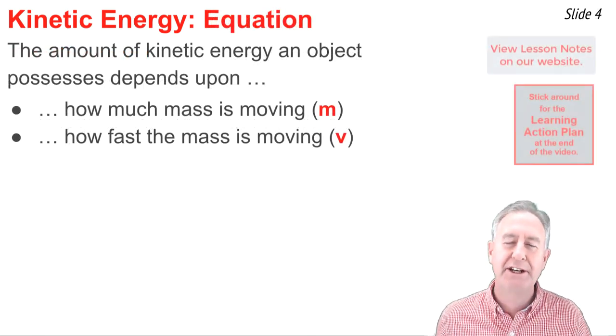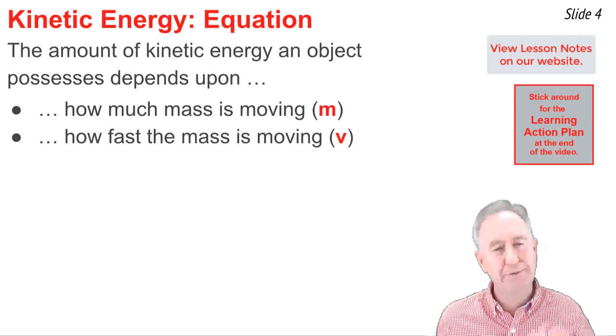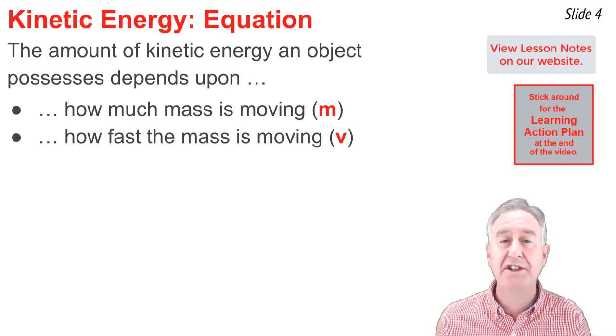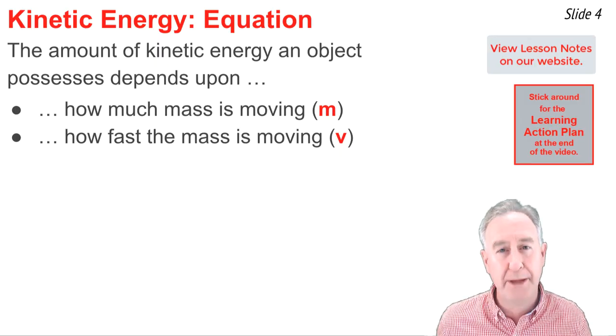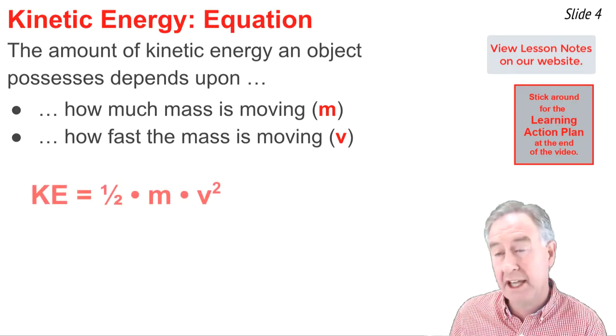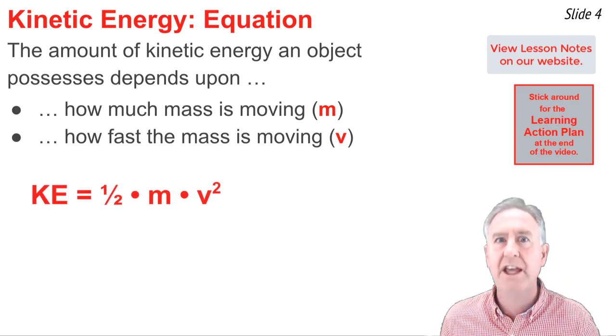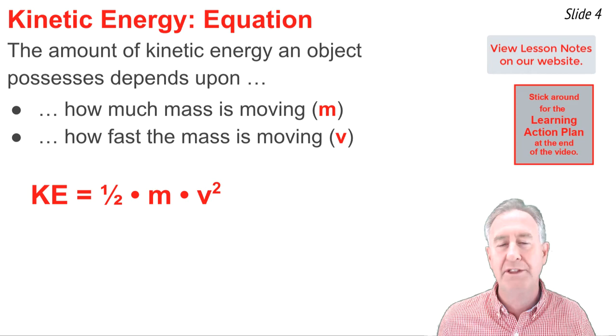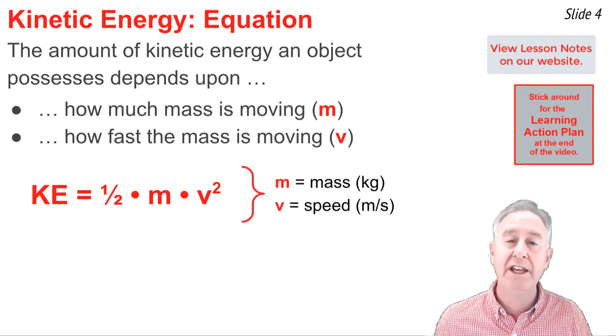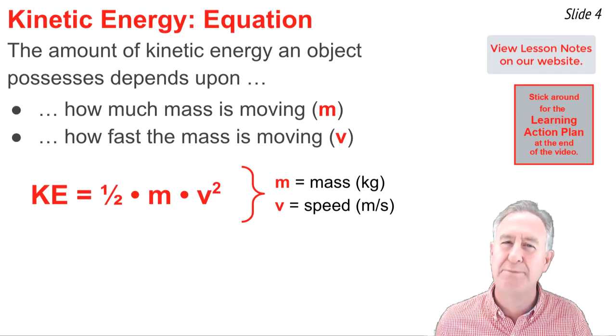The amount of kinetic energy an object possesses depends upon two variables: how much mass is moving and how fast that mass is moving. That is to say, kinetic energy depends upon mass and speed. We can represent this by the formula: kinetic energy equals one-half m times v squared. In this formula, m represents the mass in units of kilograms, and v represents the speed in units of meters per second.